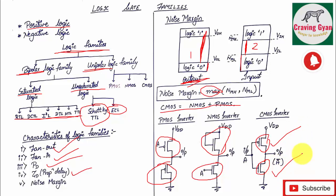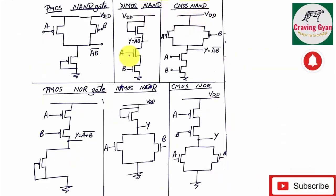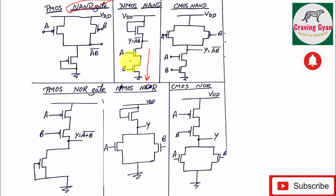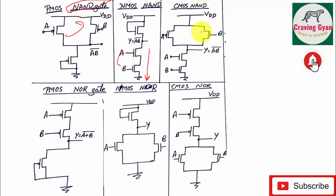PMOS is connected between VDD and Vout, and NMOS is connected between Vout and ground. For a CMOS NAND gate — in MOS logic you always get a complemented function — two NMOS transistors in series realize the NAND function. NMOS configuration is always the complement of PMOS: if NMOS is in series, PMOS should be in parallel. Combining both parts forms the CMOS NAND gate.